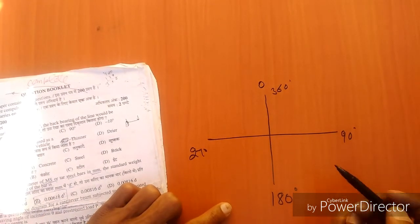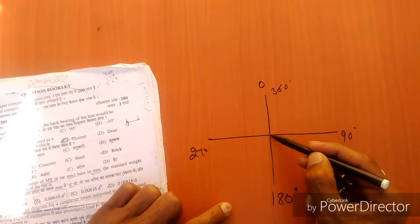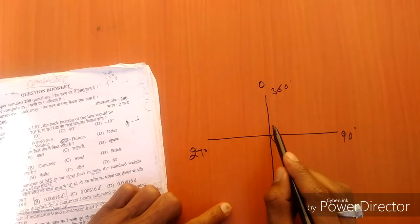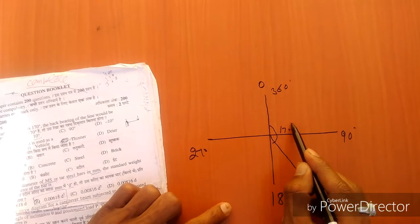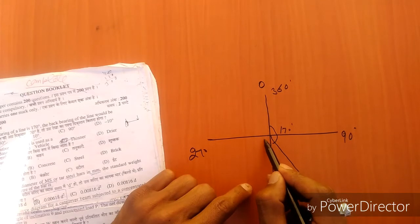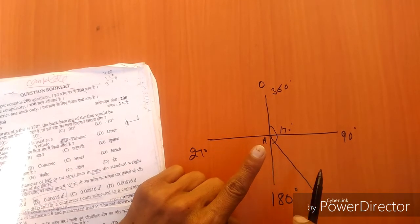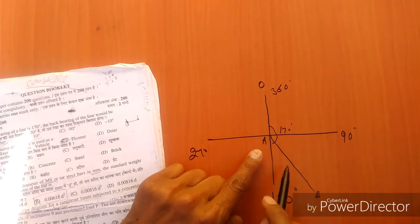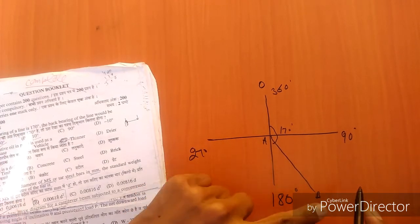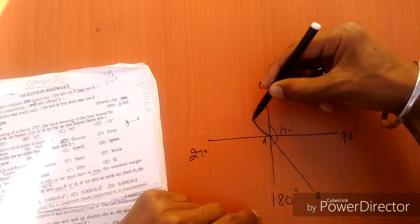The fore bearing is 170 degrees, which is between 90 and 180 degrees. This is line AB, and this is the fore bearing of AB. For the back bearing, you can see the formula: fore bearing plus or minus equals plus or minus 180 degrees.